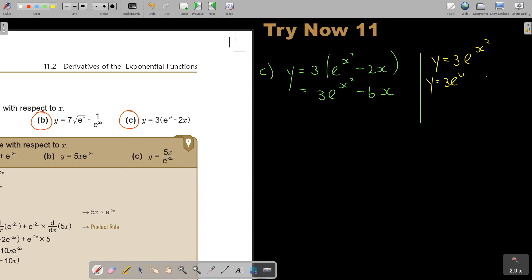So dy by du is equal to 3e^u and du by dx is equal to 2x. And if you multiply this two, this cancels. So dy by dx will then just give you 6x e^u. And what was u? u was just e. Don't forget u is just x to the power of 2.